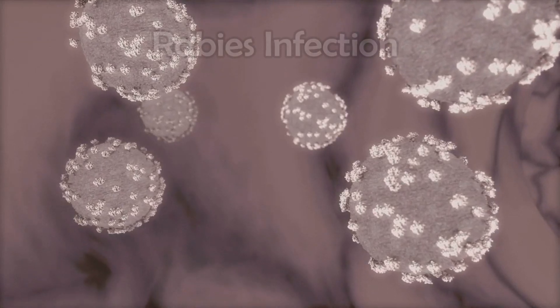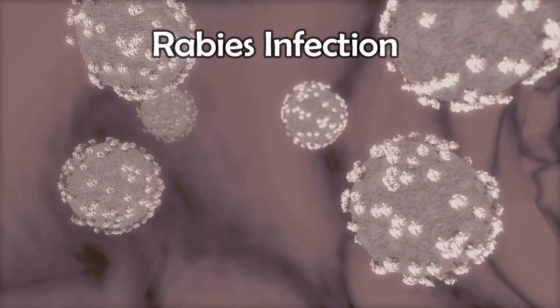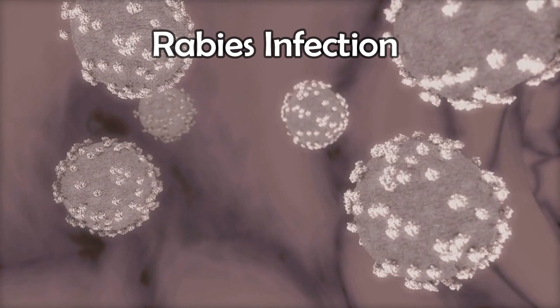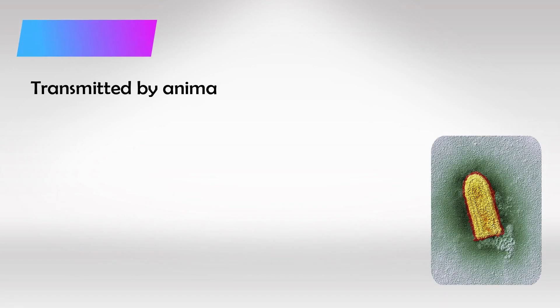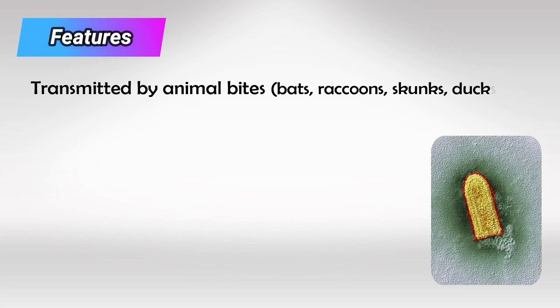Welcome back. In this video we'll talk about rabies infection. This bullet-shaped virus transmits by bites of bats, raccoons or skunks, less commonly by dogs. In certain scenarios, for example a bat cave filled with bats that have rabies, simply breathing the air will put you at risk of having rabies, without even getting bitten.